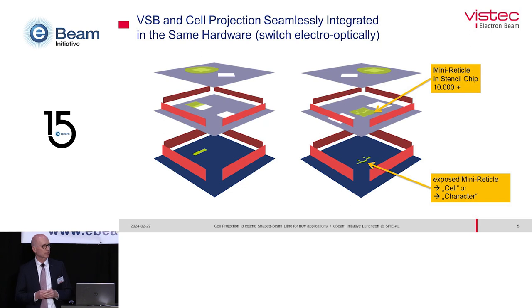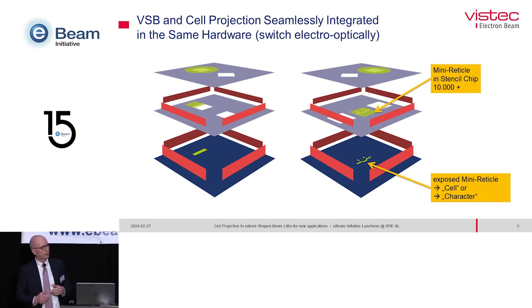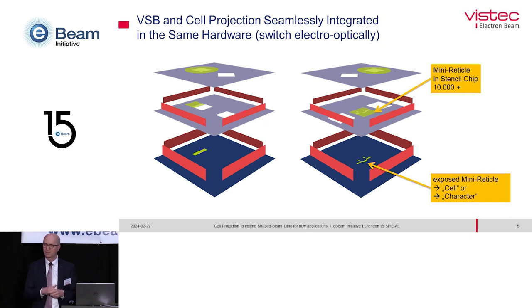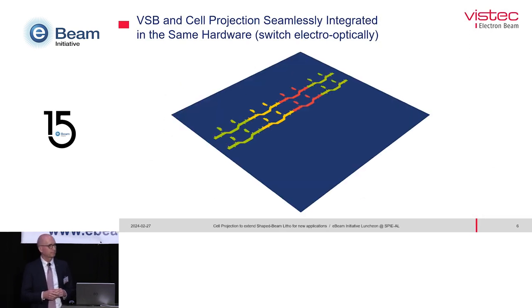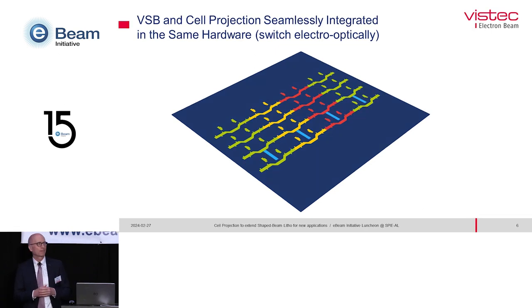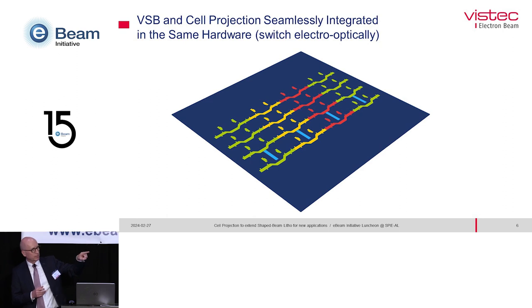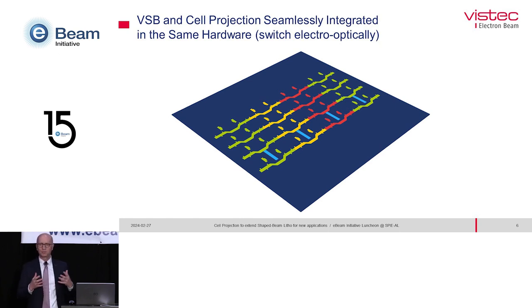Now let's come to cell projection. When we add to the physically same second aperture a structure which is more complex, we can use the shape deflection means to select many of these so-called characters or cells. We call them also mini reticles, because in a certain sense these are also reticles. We can use them to write, and the writing process then looks like this. Apparently this is much faster because the whole structure is imaged in one shot. And as you can see from the blue rectangles, this can be complemented by single variable shaped beam shots, which keeps the flexibility of the whole system. So this is what we call cell projection.